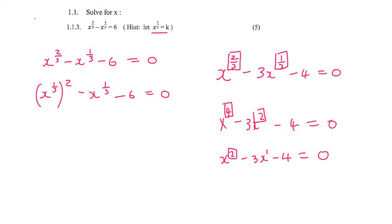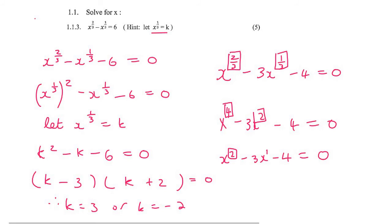Then we can use their little suggestion, which is to let x^(1/3) equal to k. And so then we get k^2 - k - 6. And now that is an easy trinomial, which will just be (k - 3)(k + 2). And so therefore, k would be equal to 3 or k would be equal to -2.